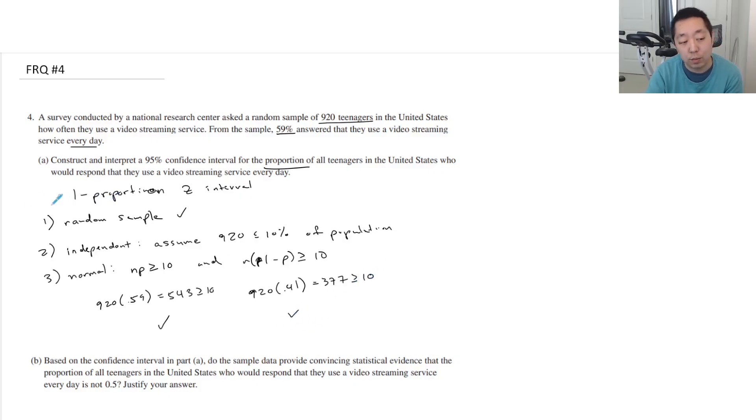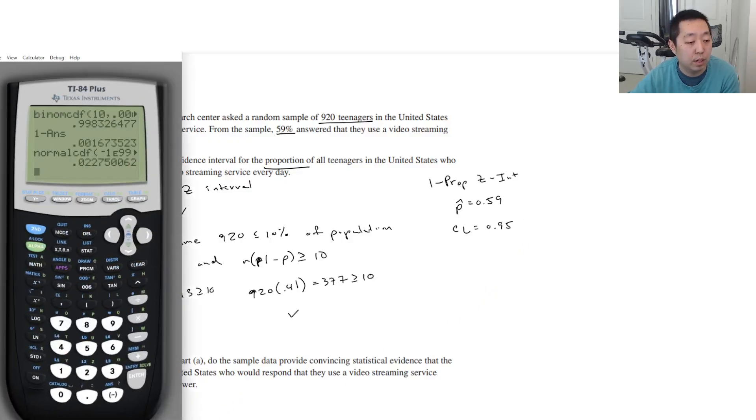Okay, so we've stated the name. We've set the conditions. Now we're going to use the one prop Z interval. And what are the parameters we're going to use? We're going to use P hat is equal to 0.59. And we're going to use a confidence level of 0.95.